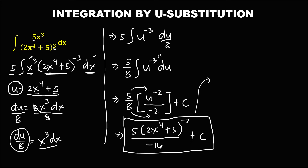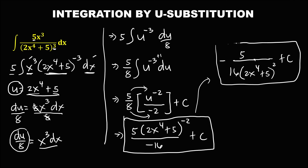Or this is equal to negative 5, over 16 times 2x to the power 4 plus 5 to the power positive 2, plus C. We just bring down this negative exponent so that it becomes positive 2.